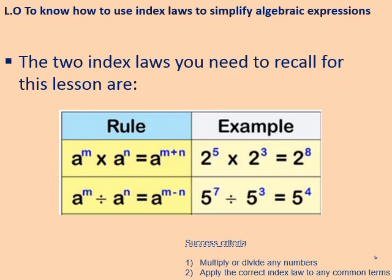So previously this year we've covered index laws, and there are two index laws you're going to need for this lesson. The first is the index law of multiplication: if you multiply two base numbers raised to powers, in the resulting answer you add those two powers together. An example is two to the power five times two to the power three gives two to the power of five plus three, which gives eight.